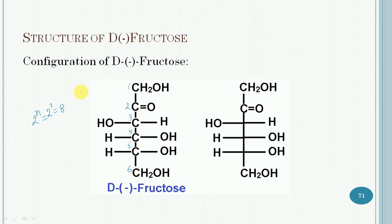The naturally occurring fructose is one of these 8 stereoisomers. Its configuration is established by the fact that it forms the same osazone as glucose. Since osazone formation involves only the first 2 carbon atoms, the configuration at the 3 stereocenters of fructose must be the same as that of glucose. Therefore, fructose is also assigned the D-configuration, represented by its open chain structure.